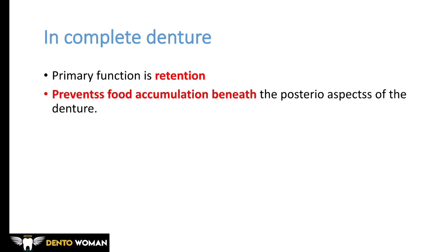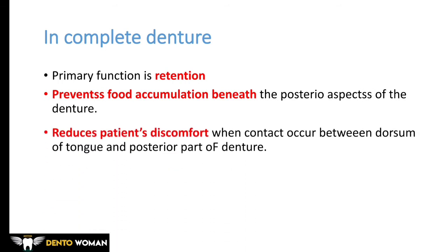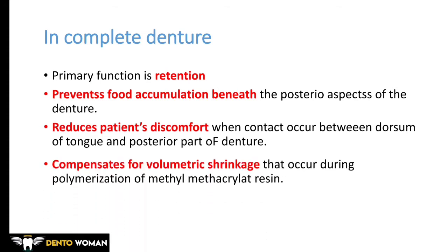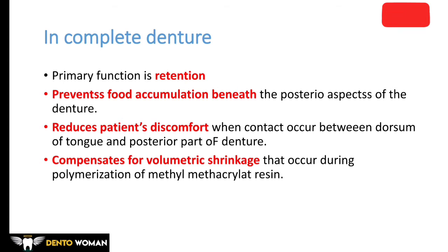In the complete denture, the primary function of the posterior palatal seal is retention. It also prevents food accumulation beneath the posterior aspects of the denture, reduces patient discomfort when contact occurs between the dorsum of the tongue and the posterior part of the denture, and compensates for volumetric shrinkage that occurs during polymerization of methyl methacrylate.